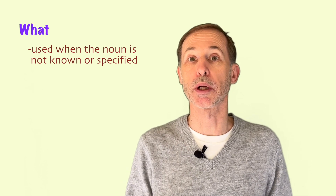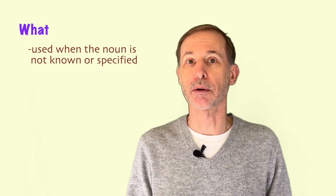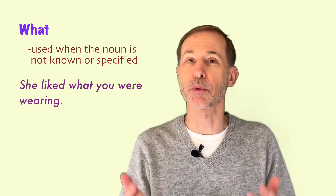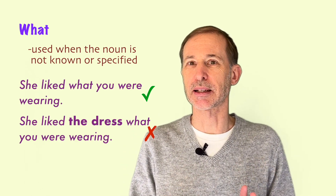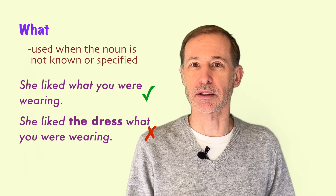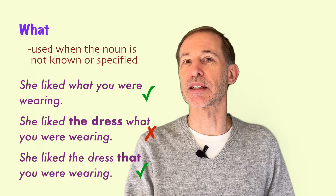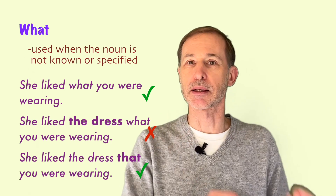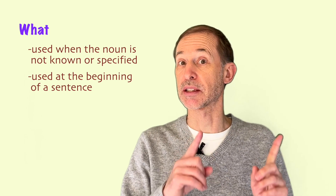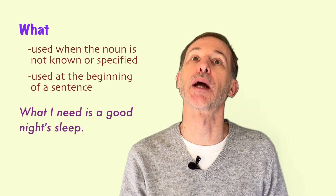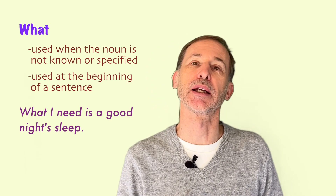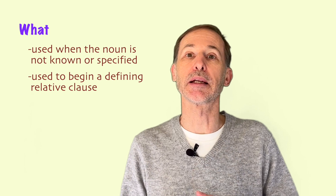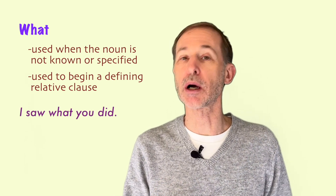What can also be used as a relative pronoun, but it's a little bit different to when and where. We use it when the noun is not known or specified, so there is no noun to describe. For example: She liked what you were wearing. We don't say 'she liked the dress what you were wearing' — that is not correct. You could say 'she liked the dress that you were wearing' or 'the dress which you were wearing,' but not what. What replaces the noun. It can be used at the beginning of a sentence — What I need is a good night's sleep — or to begin a relative clause: I saw what you did.